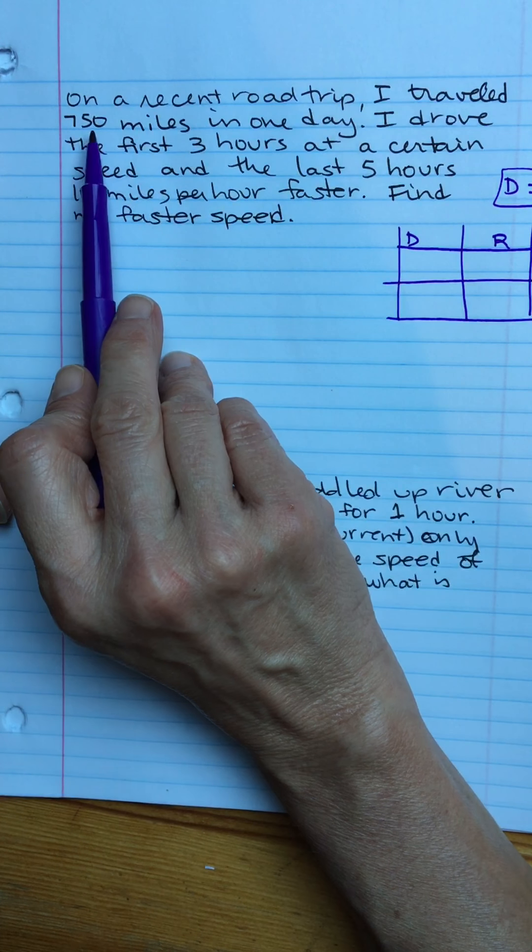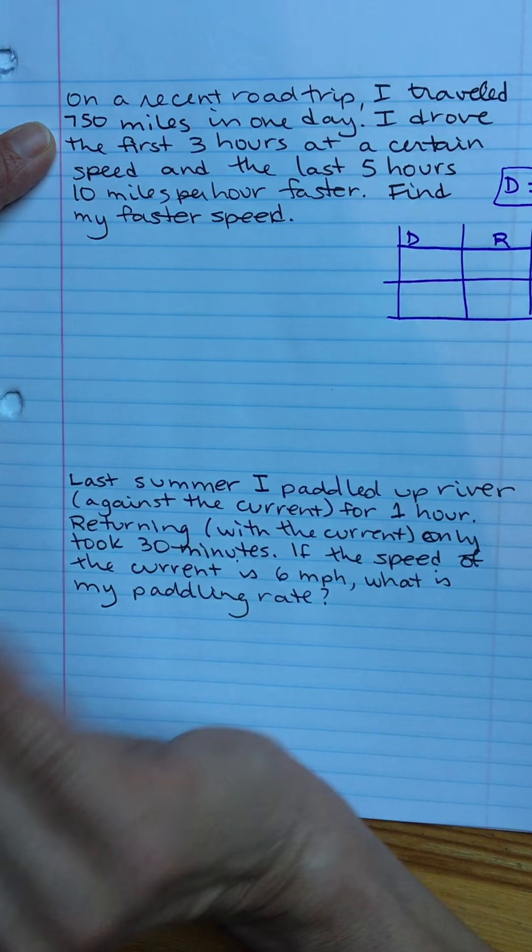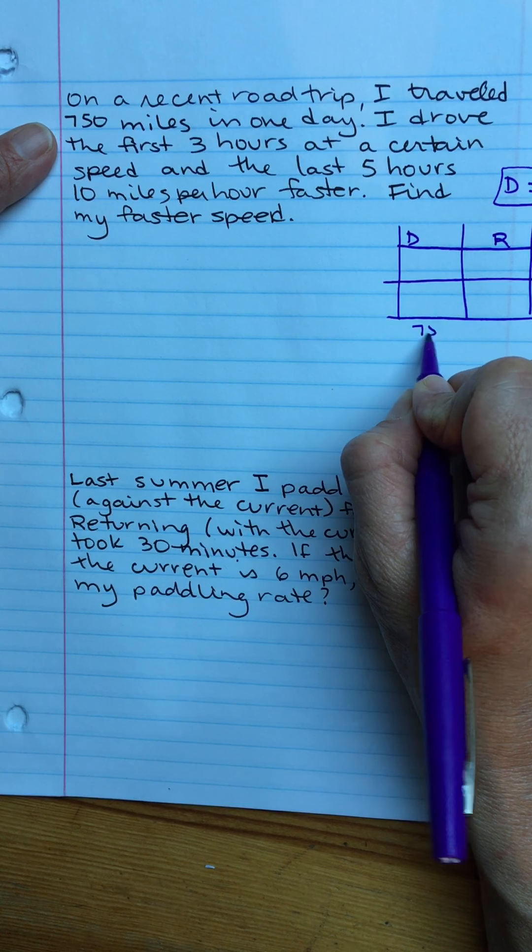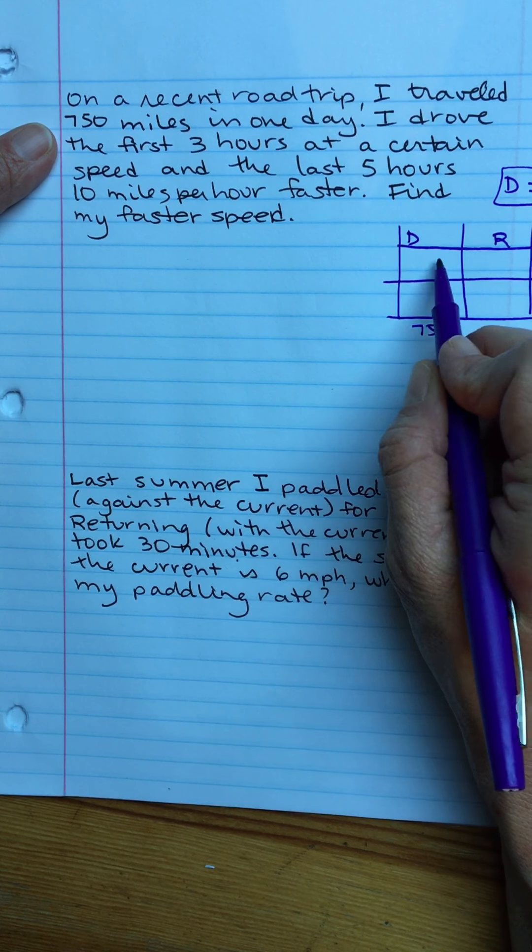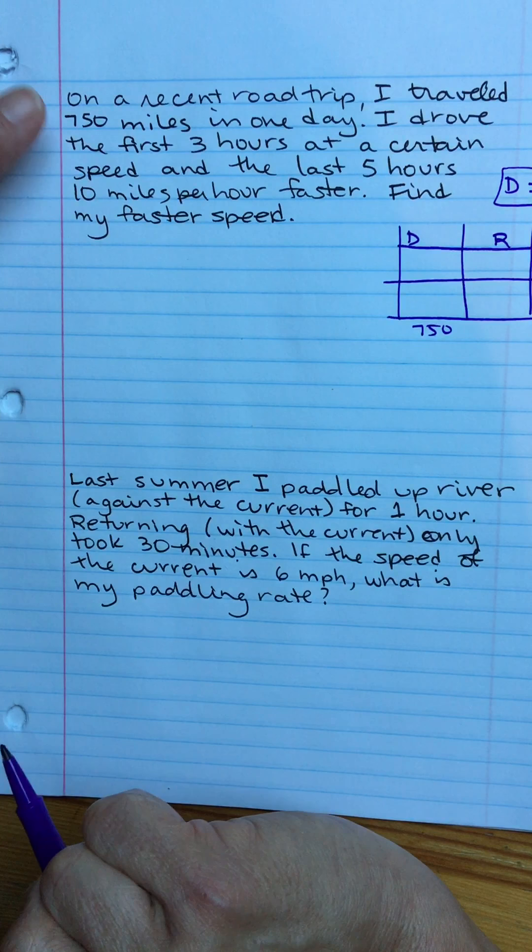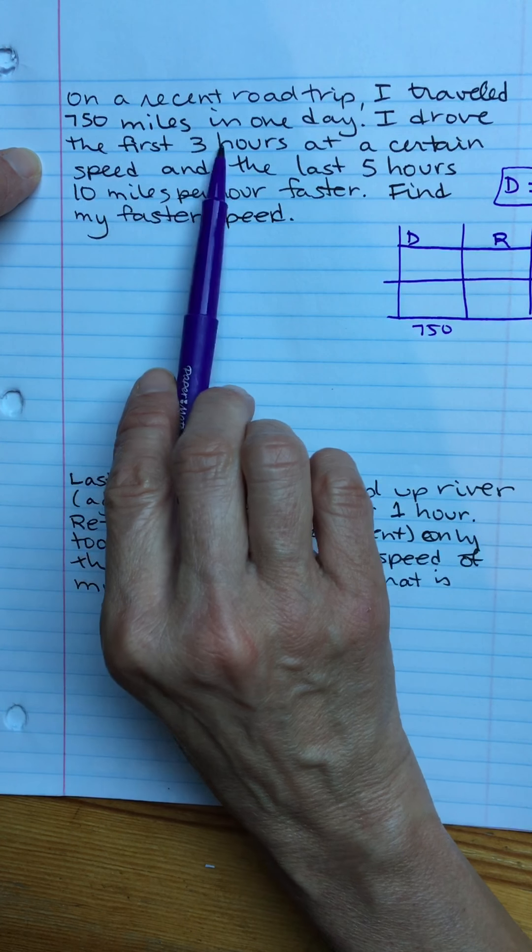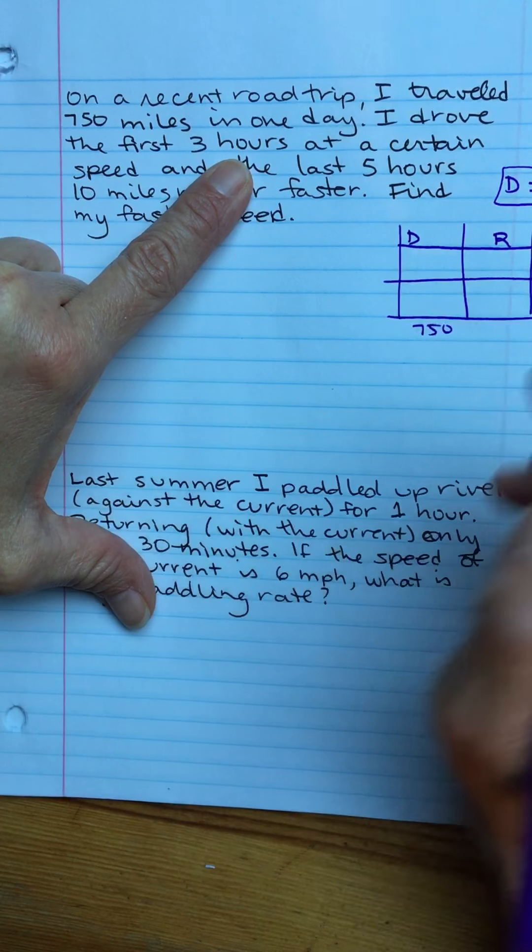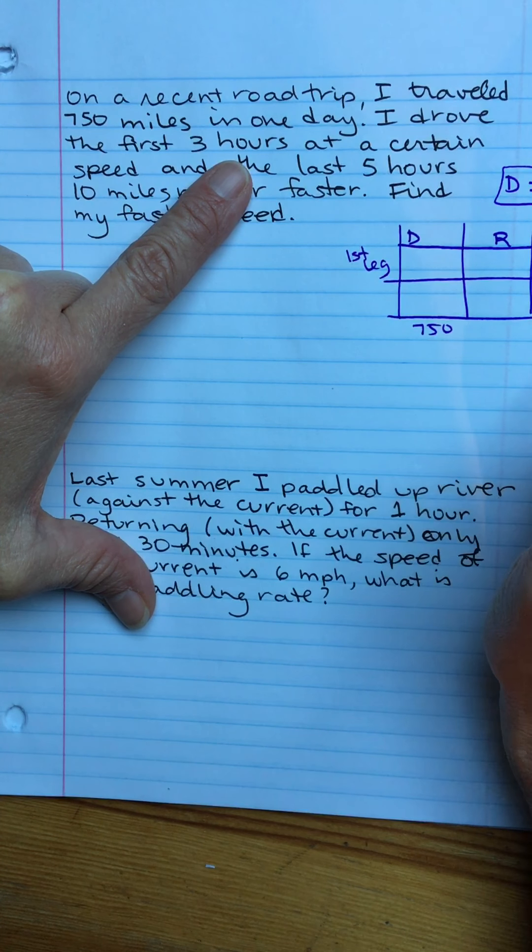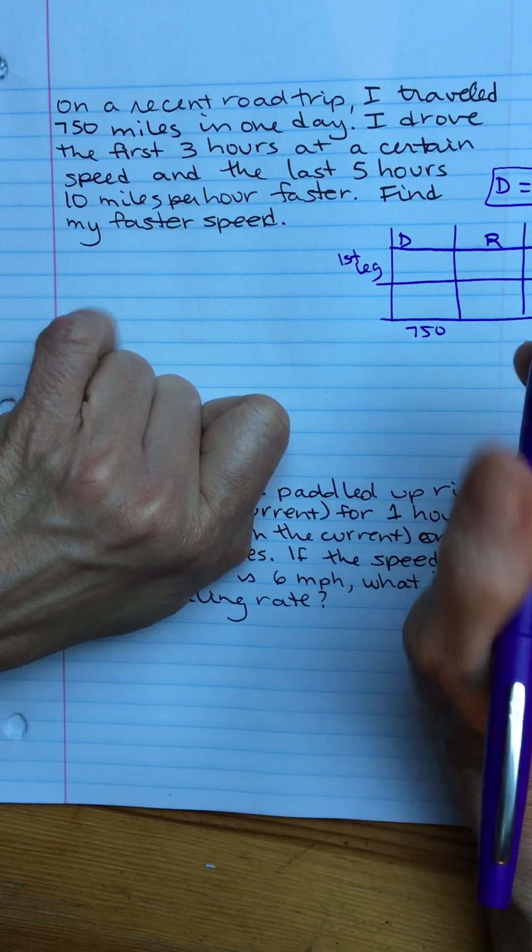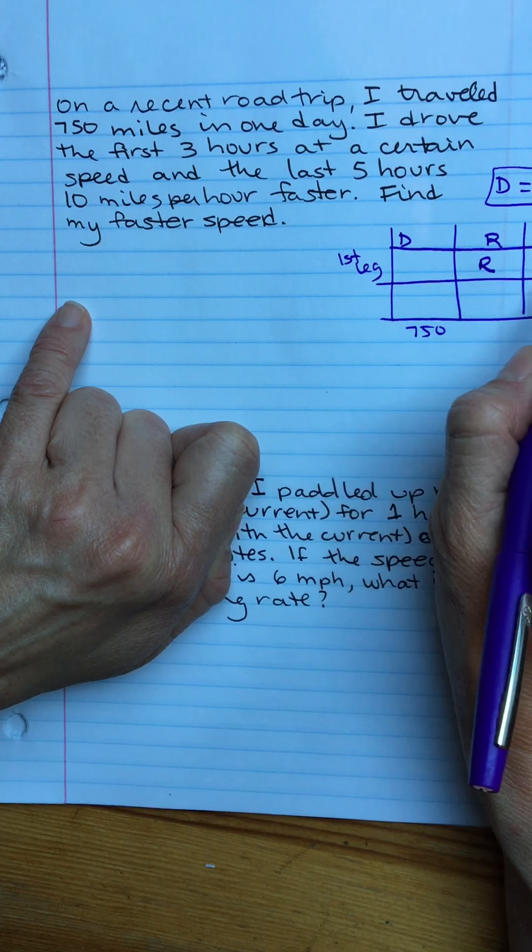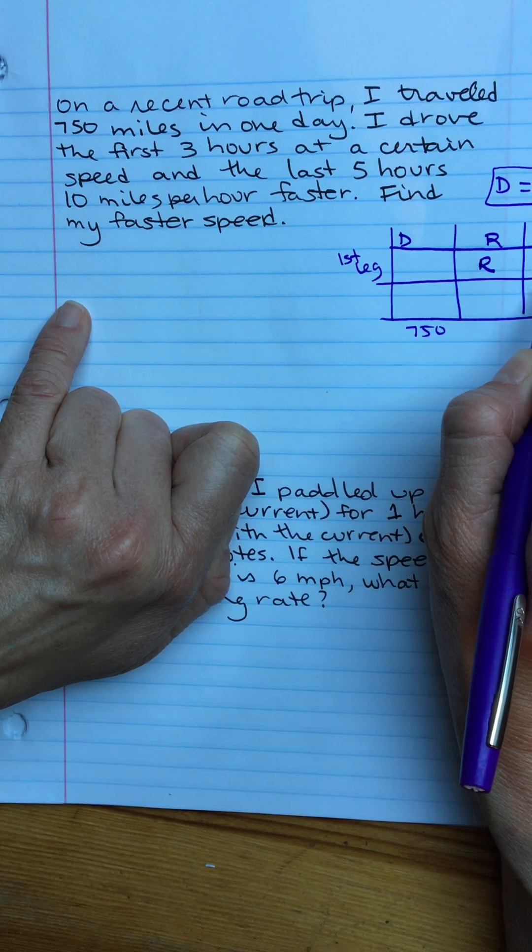I traveled 750 miles in one day, so that's the total distance. I'm going to put that down here below because I don't really know how much I did on each of the different legs. I drove the first three hours, so that's a time. I drove for three hours at a certain speed, so I don't know what that speed is so I'm going to put a letter in there, a variable R. R is my speed for the first three hours.